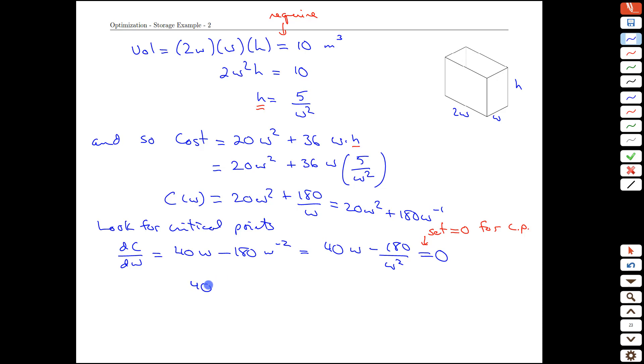That means we need to solve for w at this point. We can reshuffle this to be 40w equals 180 over w squared positive now because we moved it to the right-hand side. We bring the w up. We get w cubed is 180 over 40. That can be simplified down to 9 halves, and so w is equal to the cube root, we have w cubed here, of 9 halves. And for reference, that's about 1.65. w is a length in meters.